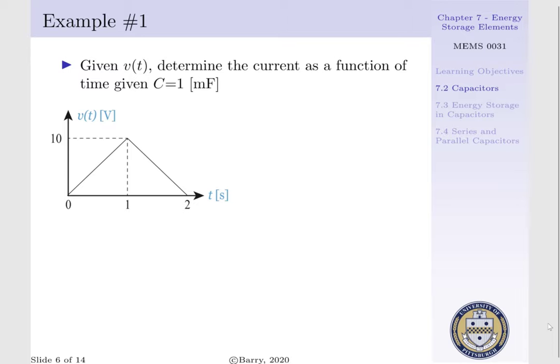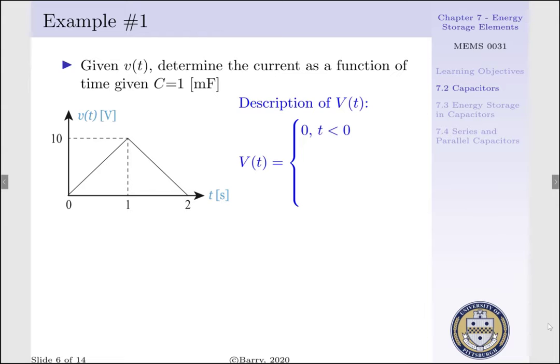To do such, we need a functional description of our voltage as a function of time. For all time less than zero, we're going to assume the voltage potential across our capacitor is equal to zero.